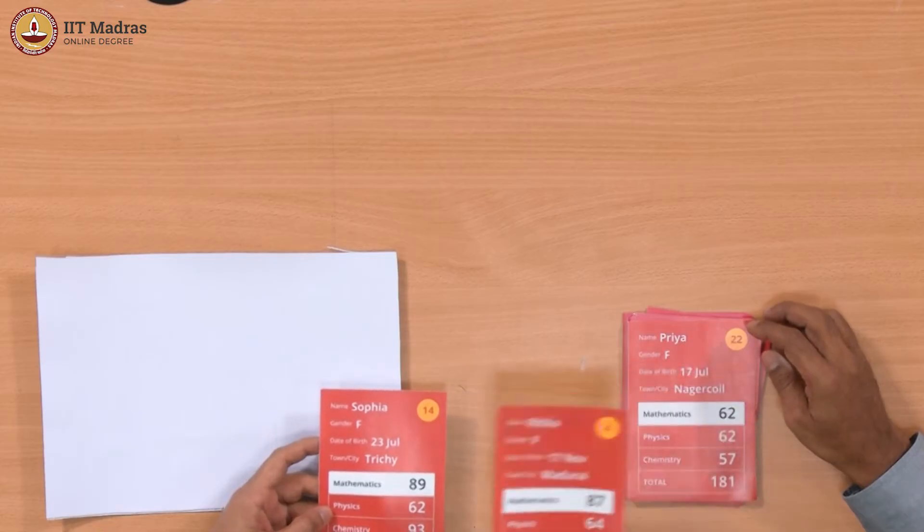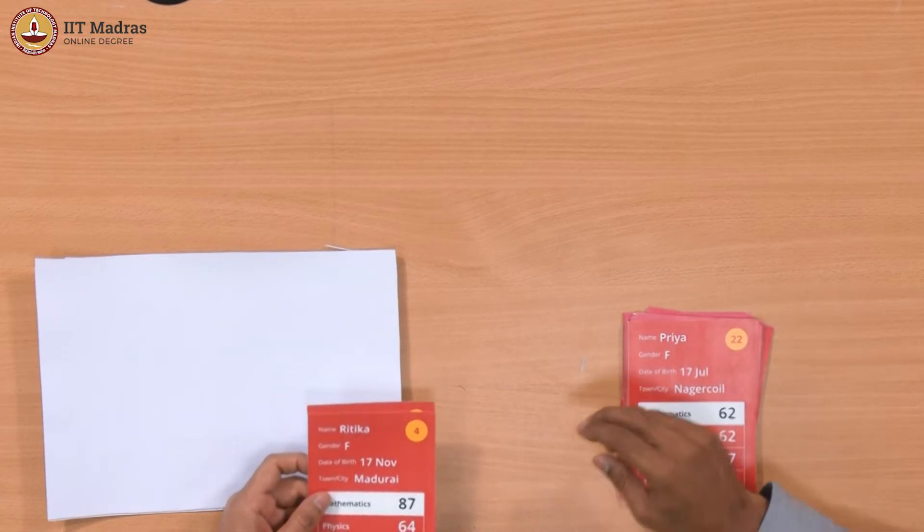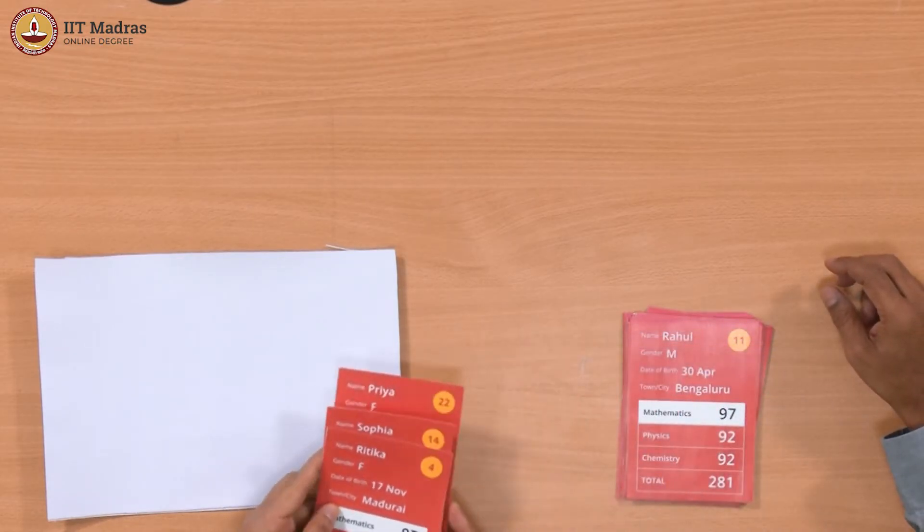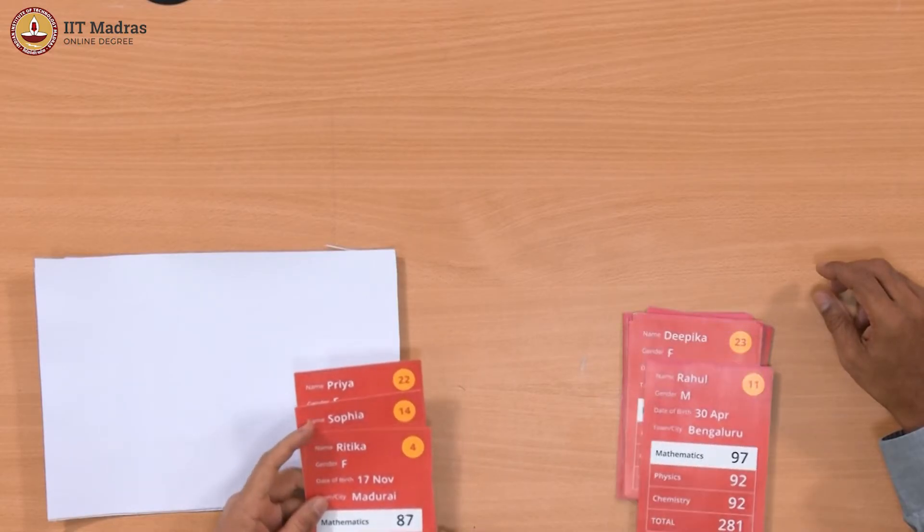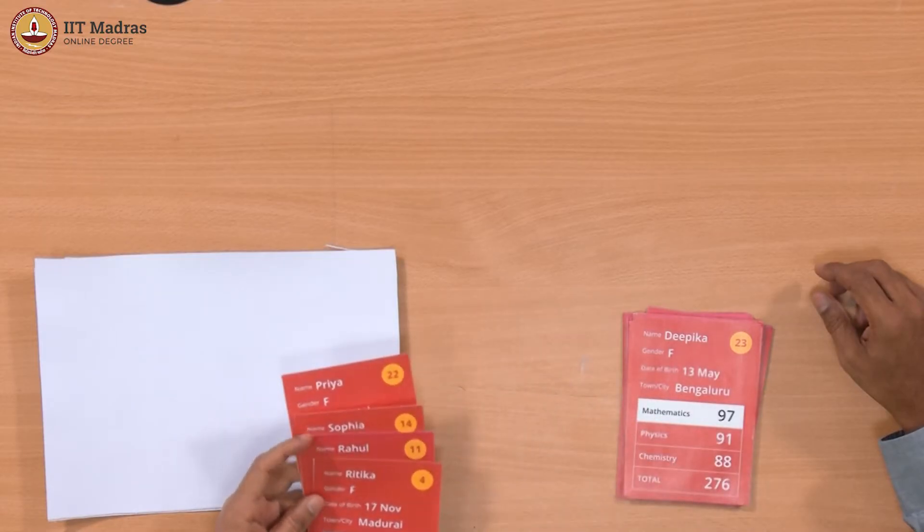We can pick up this first card 14. If we have only one card, it is in order. Then we pick up the 4. And now we decide whether the 4 must go before or after. Should go before. Now we pick up this 22. Should go after 14. So 22 must go after 14. Now we pick up this 11, and 11 must be after 4. So we find a place to insert it in the correct place.